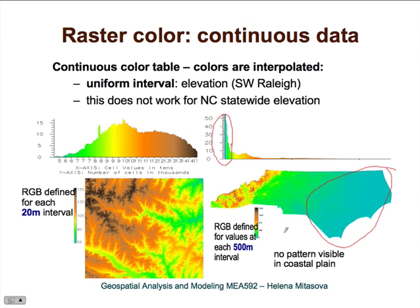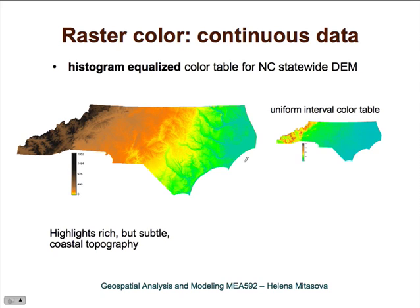So what to do? We can use a different type of color table. One type that works well for this data is a so-called histogram equalized color table. We'll talk more about histogram equalization when discussing how to rescale raster data. For now, just remember that a histogram equalized color table distributes colors based on the cumulative histogram of the map and based on area — so we have more colors for values that cover a large area.